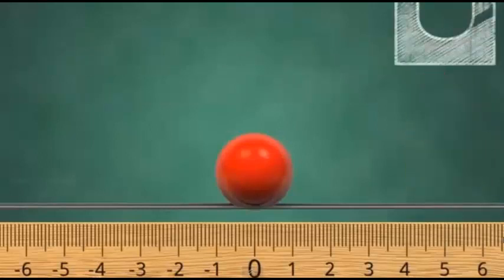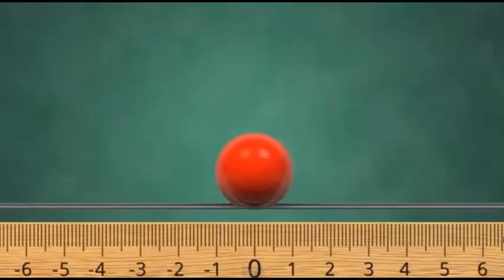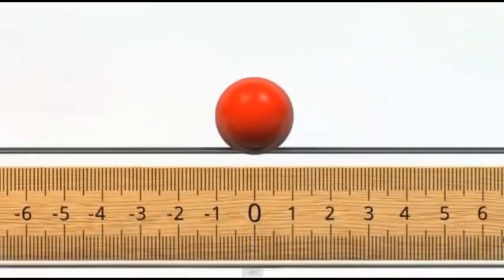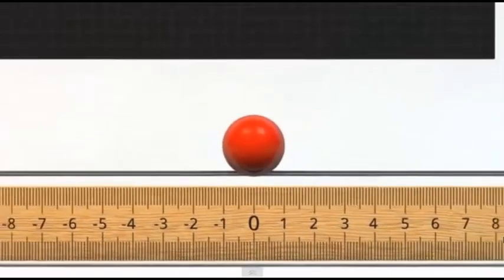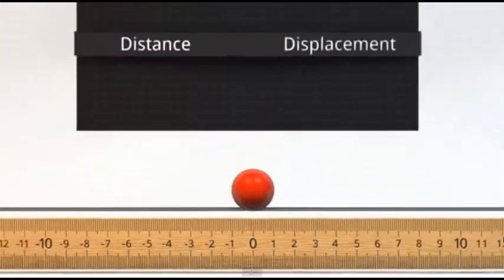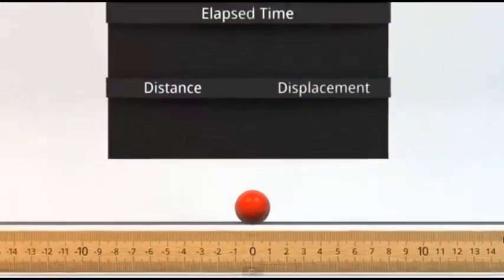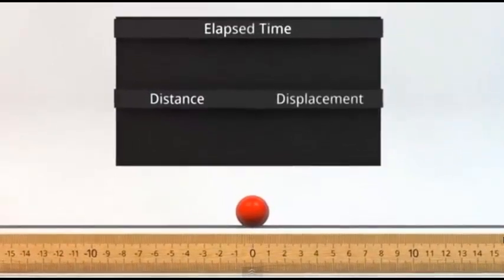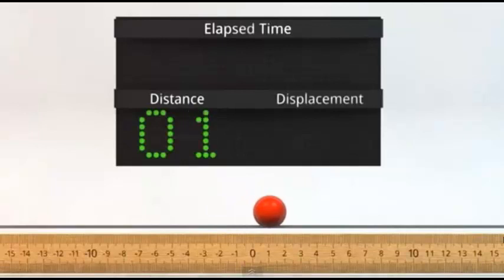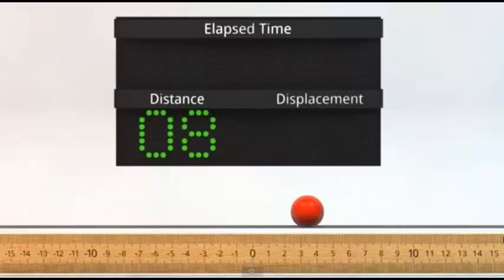What about if we want to move the original red ball to a new position? To do this we'll have to talk about a few new ideas. Distance tells us how much ground the ball has covered since it started moving. Notice how any movement of the ball adds to the distance.